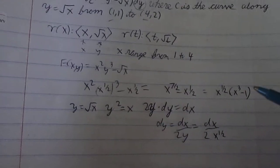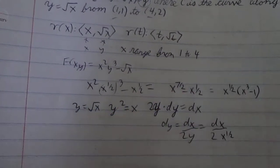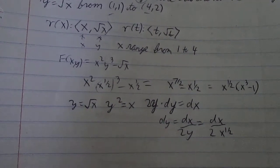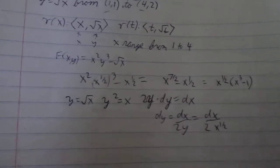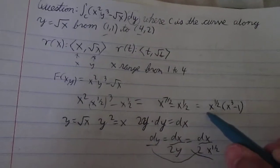which is also equal to dx over 2 times x to the 1 half. This, again, is from our initial substitution. It's just the relationship between y and x. So, now, we have something for dy, and we have something for the integrand. So, we can substitute these in here and change the limits accordingly.